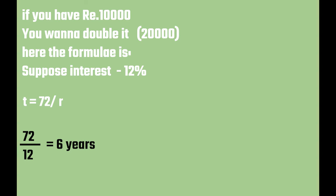That is, here you divide the number 72 by the rate of return of an investment.